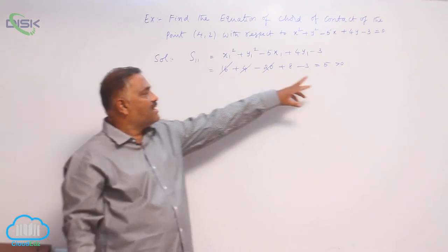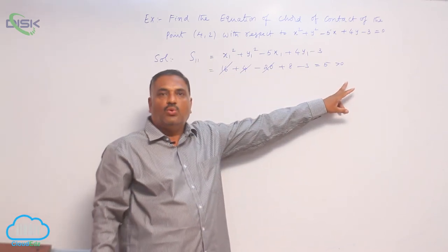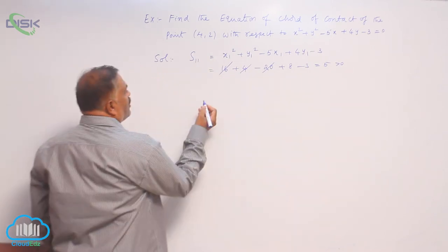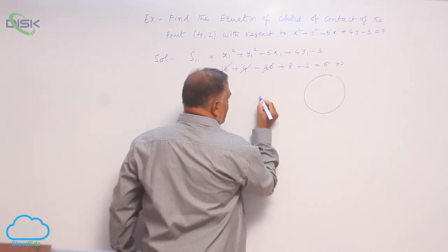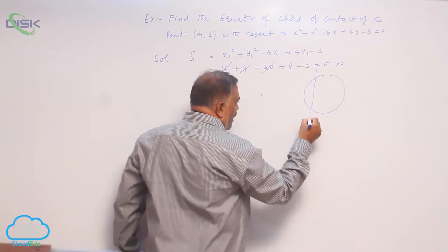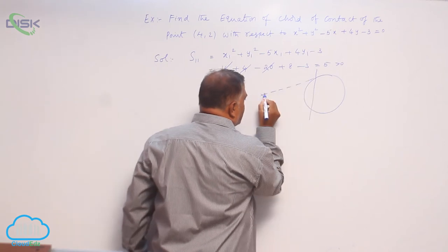So S11 greater than 0 means point lies outside the circle. So when point lies outside the circle like this, our chord of contact exists inside the circle.